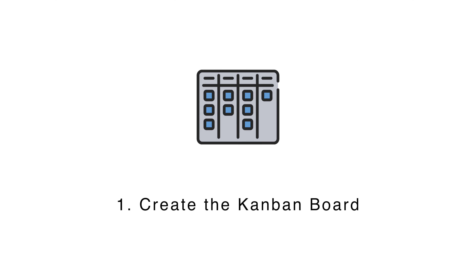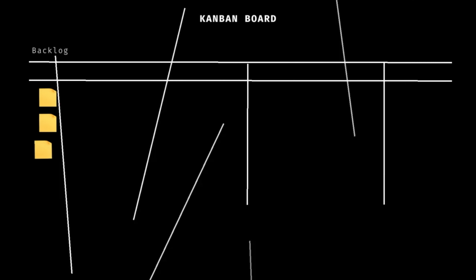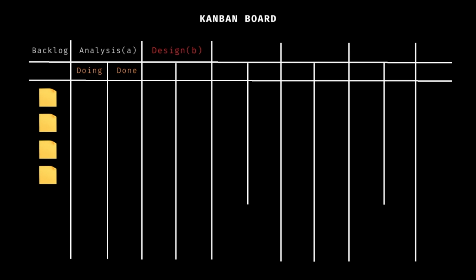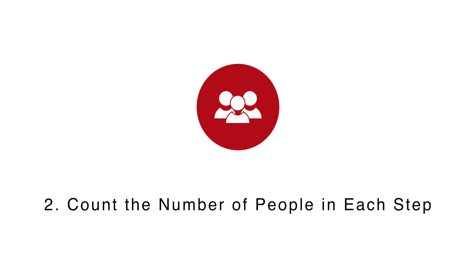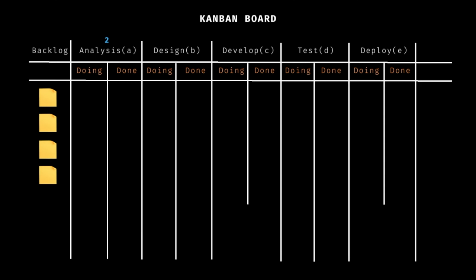First is to create a Kanban board. Let's say your team creates a Kanban board with five columns: Analysis, Design, Develop, Test, and Deploy. The second step is to count the number of people working on each column in the Kanban board. This helps us estimate how much work each column can handle. For example, let's say there are two business analysts in the analysis column, three UI/UX professionals in the design column, four developers in the develop column, three testers in the test column, and one person handling the deployment. When lacking performance data, a good starting point is setting the initial WIP limit for each column equal to the number of team members working on that column.